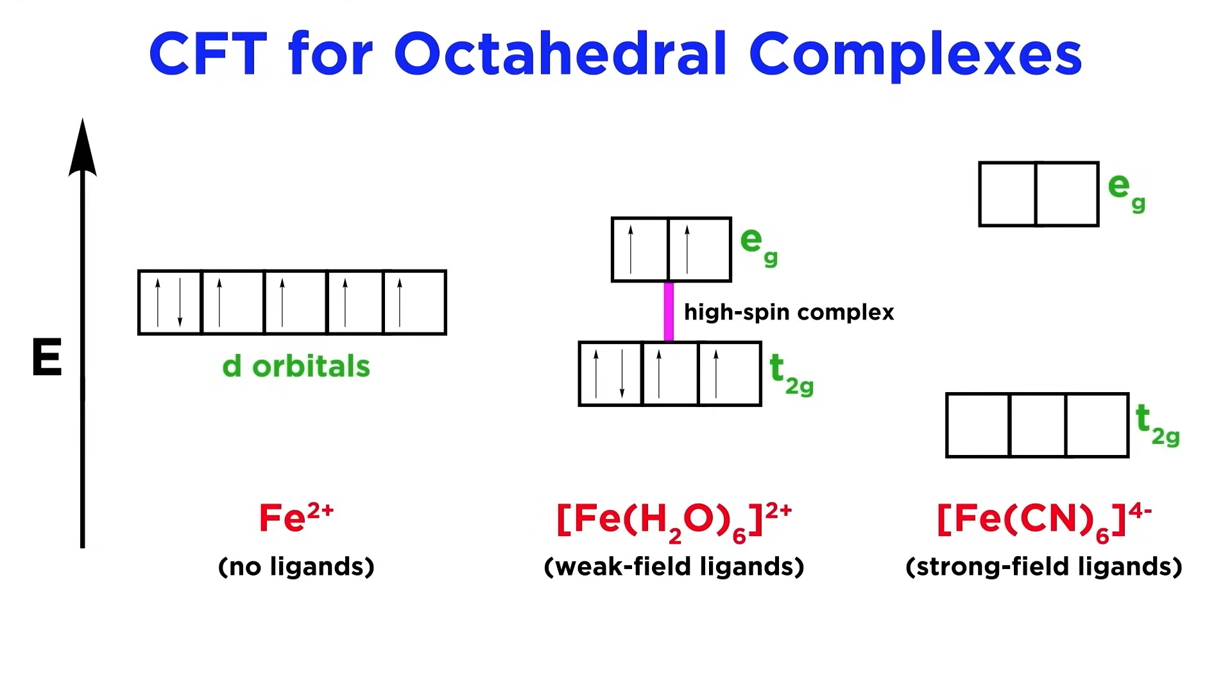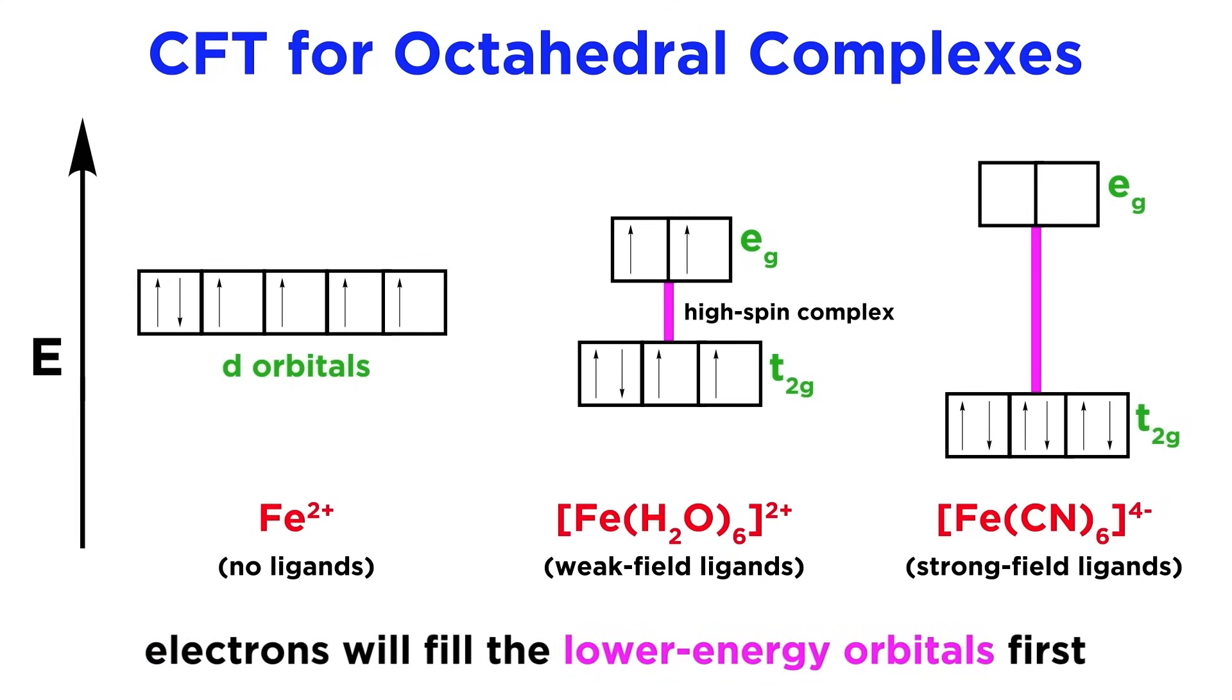But if in a complex with strong field ligands, the difference in energy is very great. In such a case, the system will be at a lower energy by simply doubling up electrons in the lower energy t2g orbitals. These are called low spin complexes.